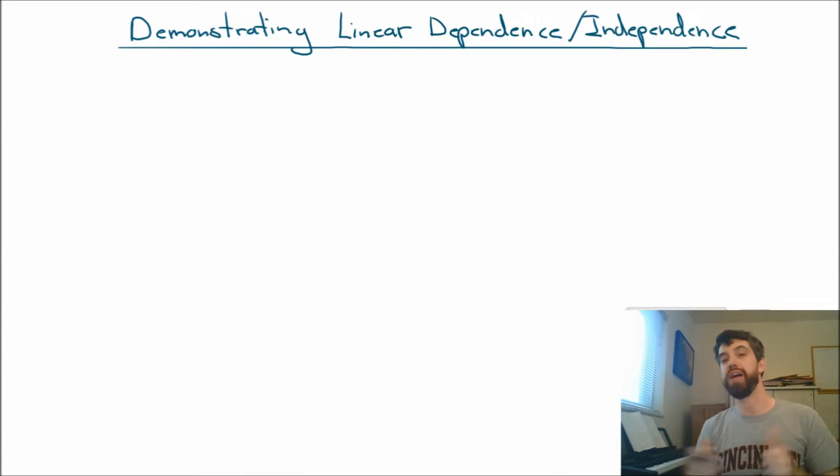Suppose I give you a list of vectors. The question is, how are we going to know whether that list of vectors is linearly dependent or linearly independent?